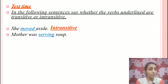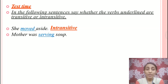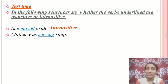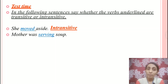Next example: 'Mother was serving soup.' Let us check whether there is an object or not. What was mother serving? Soup. You got an answer! That means there is an object. When there is an object in the sentence, the verb is a transitive verb. So in the sentence 'Mother was serving soup,' the verb 'serving' is a transitive verb.